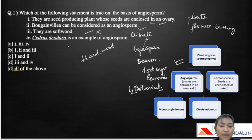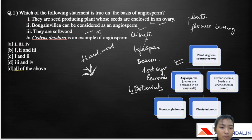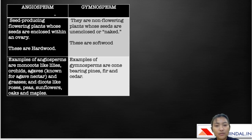The fourth statement says Cedrus deodara is an example of an angiosperm. Cedrus belongs to gymnosperms because it is not a flower-bearing tree and its leaves are needle-like. So options one, three, and four are not correct. Option B, which says one, two, and three, is also not correct. Option C, which says one and two, is the correct answer.